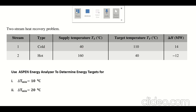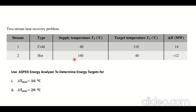Prior to energy recovery, steam was used to heat the cold stream and cooling water was used to cool the hot stream. Now we are asked to use the S1 Energy Analyzer to determine the energy targets for delta T minimum equal to 10°C and delta T minimum equal to 20°C — that means, if these two streams are matched, what will be the heat recovery, how much heating utility will be required, and how much cooling utility will be required.